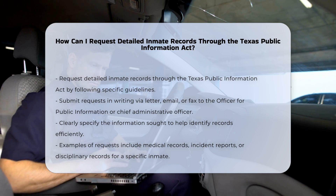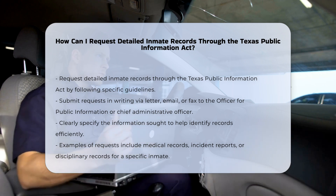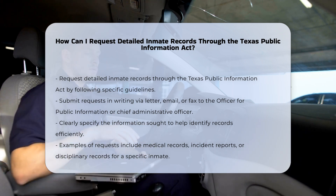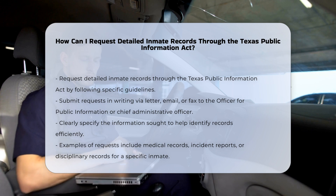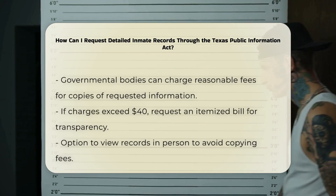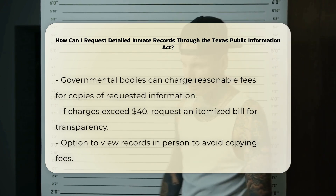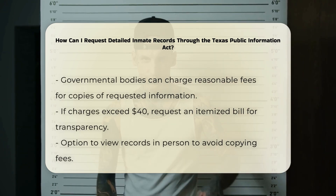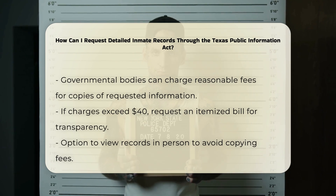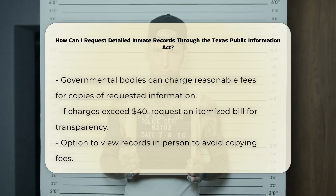Clarity and specificity: Be clear and specific about the information you are seeking. This helps the governmental body to quickly identify the records you want and avoids the need to narrow down a broad request later. For example, you might ask for medical records, incident reports, or disciplinary records related to a specific inmate.